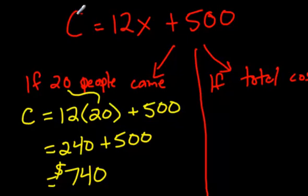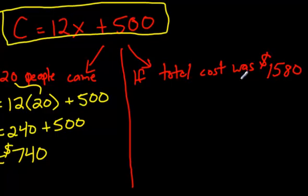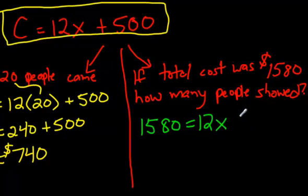You could use the same equation for the next type of question. If the total cost was $1,580, the question should say, how many people showed up? So this is what you do. You put the $1,580 right here. Notice $1,580 is going right where the cost is, where the C is. Over here, you write the 12. We don't know how many people, so we put the X plus 500.